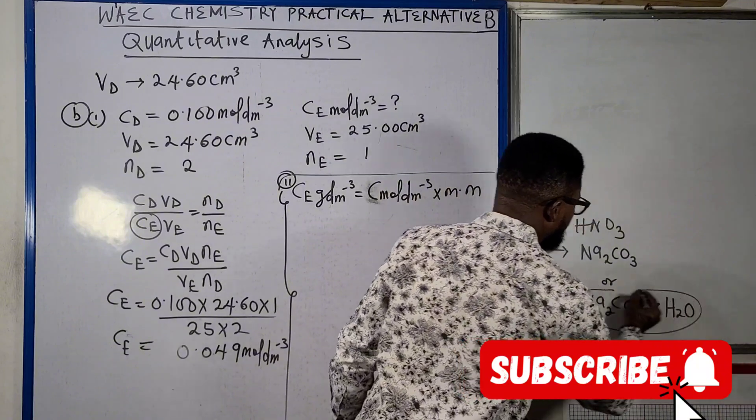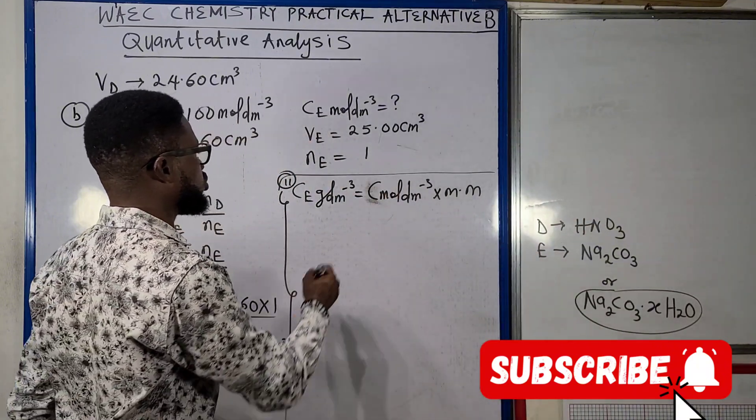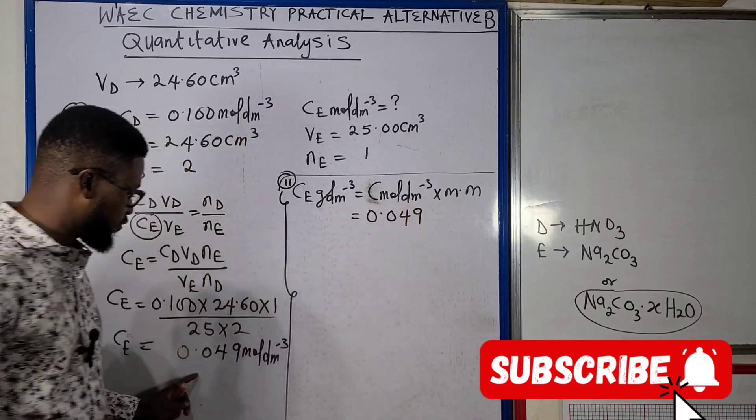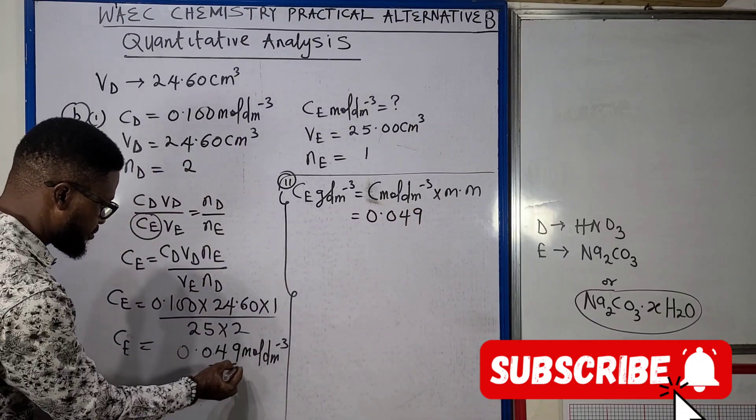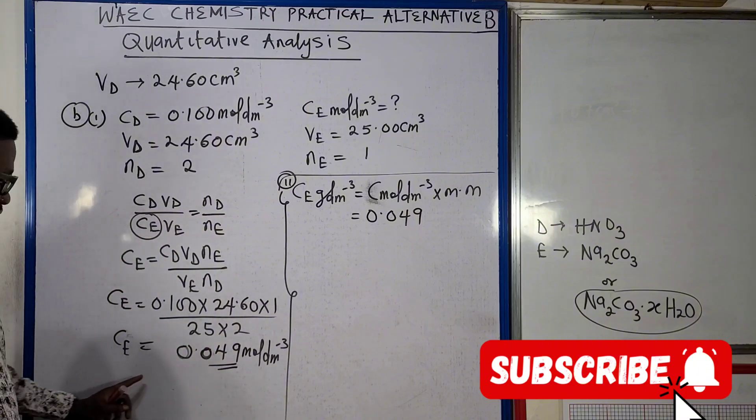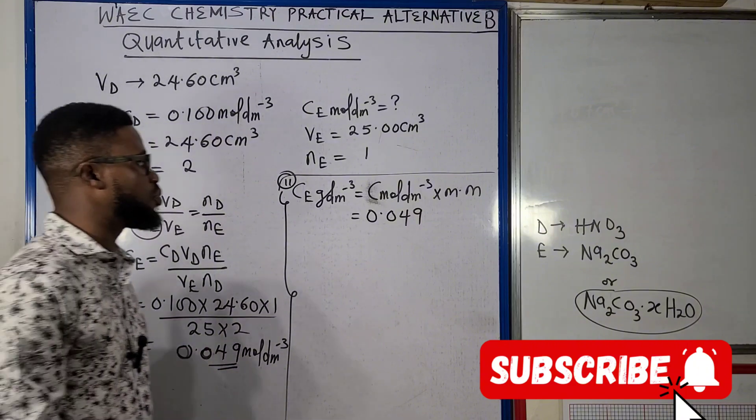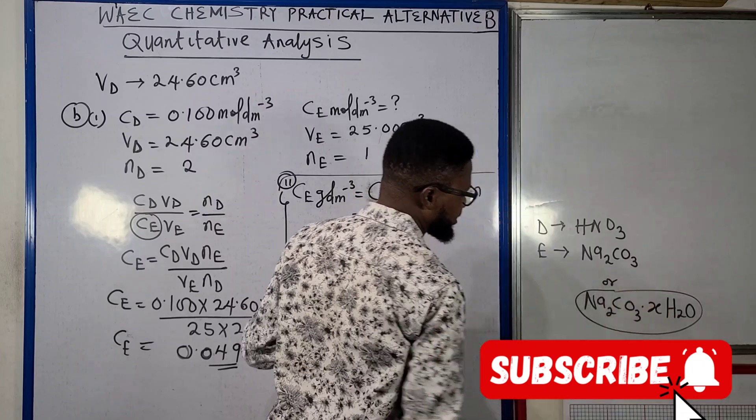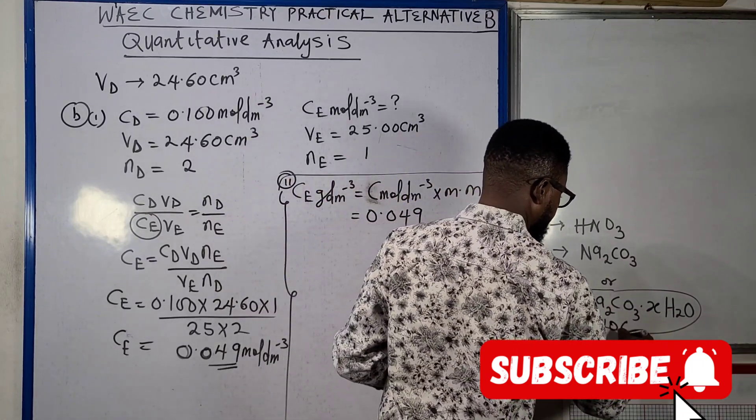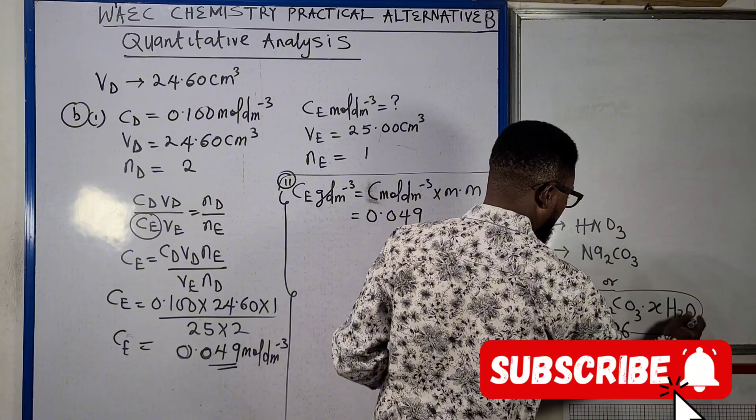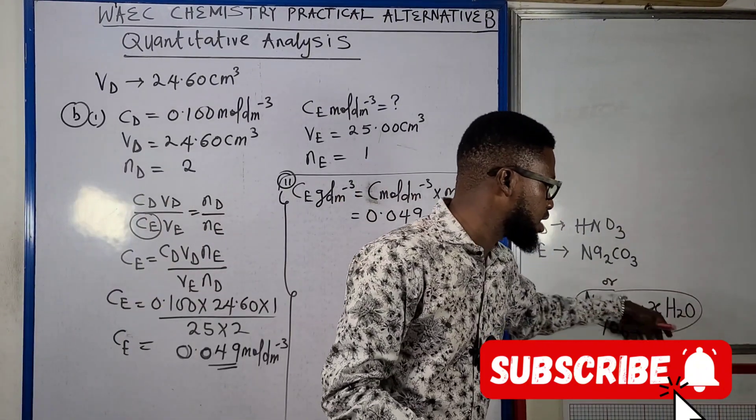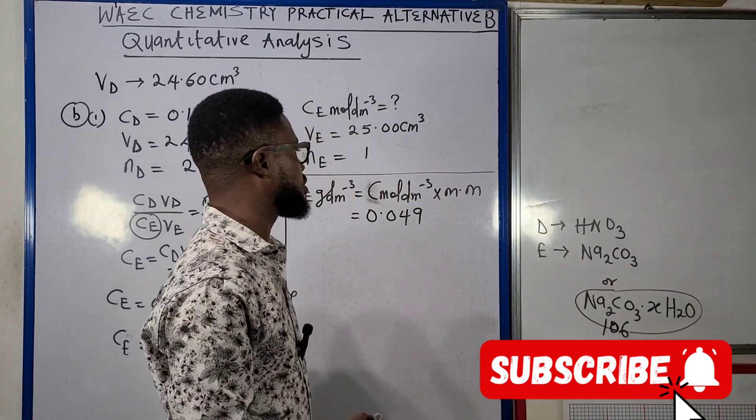In this case we are talking about sodium carbonate dot xH2O. This is going to be 0.049 as we've gotten that to be our CE in mole per dm³. But the molecular mass, because we are dealing with this now, of course we know Na2CO3 is 106, but we don't know what x is and what the whole of the water of crystallization is going to represent.